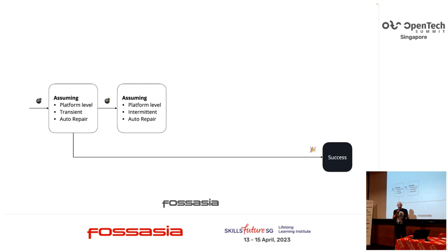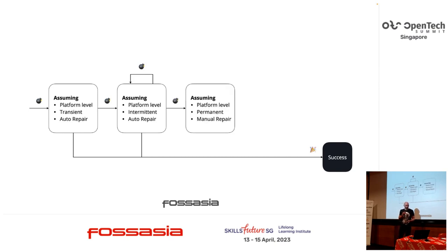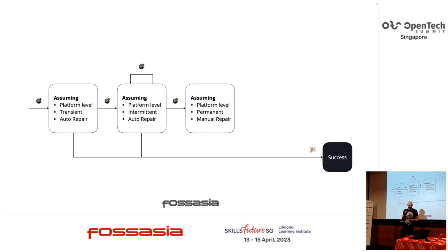If the immediate retry does not succeed, upgrade your understanding of the failure — now assume it's intermittent but still platform-level and auto-repairing. Retry a bounded number of times, typically with exponential back-off. If one of the retries succeeds, we successfully mitigate the failure. If none succeed, upgrade again: assume permanent platform-level failure. The process suspends and awaits repair of the underlying failure — manual intervention is needed.